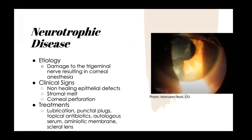Neurotrophic disease is essentially a degenerative disease of the trigeminal nerve. It can occur when there is an insult to the trigeminal nerve anywhere along its path from its nucleus to the corneal nerve endings. Once the sensory nerve is damaged, it can alter neuromodulators, affecting epithelial cell vitality and metabolism, resulting in persistent epithelial defects that can progress to stromal melts and corneal perforation. Treatment includes extensive lubrication, punctal plugs, amniotic membranes, and scleral lenses.